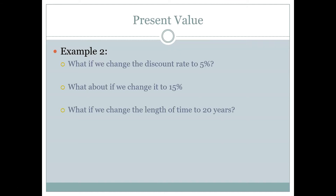Something I think is really important is that not only do you remember how to plug things into the calculator, but that you also have a really good understanding of why all of these things happen. What happens, for instance, if we earn more money? If I start with $100, what happens to my future value if my rate goes up? I'd like you to have an intuitive understanding of the process: if we earn more money on our initial investment, we should have a higher future value; if we earn less money, we should have a lower future value. If I have a longer investment length, I should have a higher future value; if I have a shorter length, I should have a lower future value — less time for all that compounding.